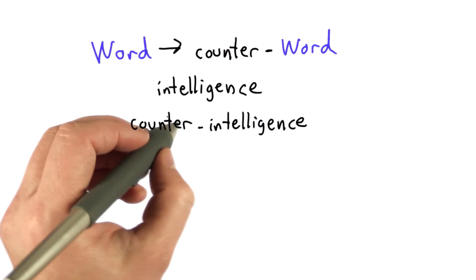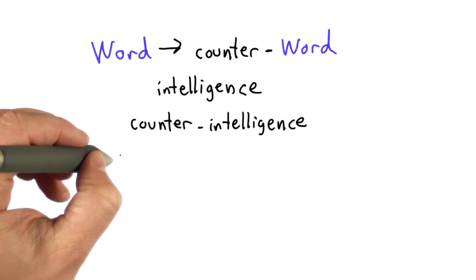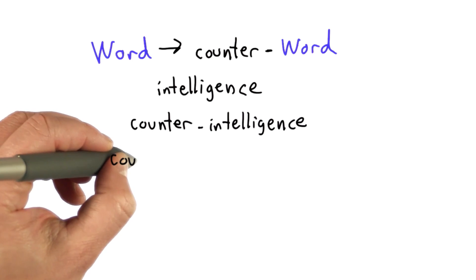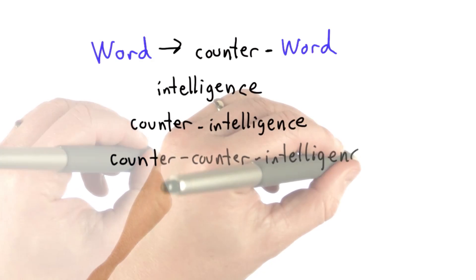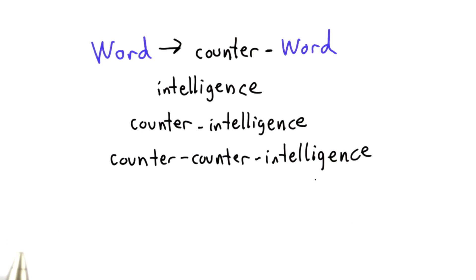We can use the rule again. So now this is a word, and we could replace this word with counter in front of that word, and we get counter-counterintelligence. And that would be trying to thwart the enemy's counterintelligence that's preventing you from getting intelligence.